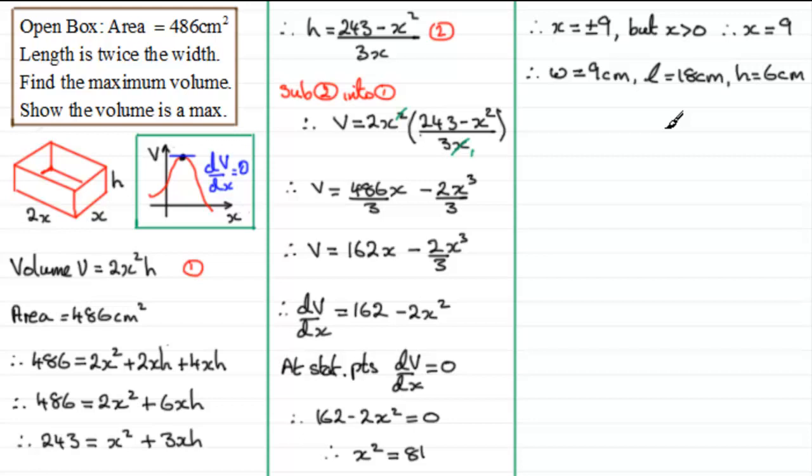It's very easy just to get the volume. So, the volume, volume V is going to equal 9 times 18 times 6. 9 by 18 by 6. Or, you could have just simply substituted x equals 9 into this equation here for the volume. It would have given you the same answer, and that answer is 972, 972 centimetre cubes. So that's our volume, and we've got to now show that it would have been a maximum volume.